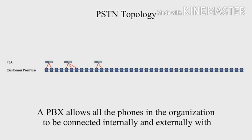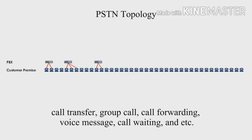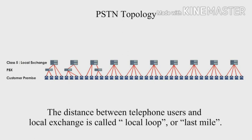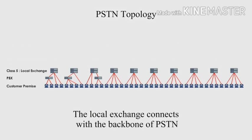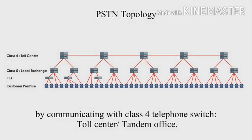A PBX allows all the phones in the organization to be connected internally and externally with a wide range of services such as caller ID, call transfer, group call, call forwarding, voice message, call rating, and more. The PBX is connected to your local exchange or central office. The distance between telephone users and the local exchange is called the local loop or last mile.